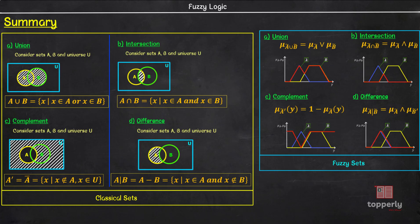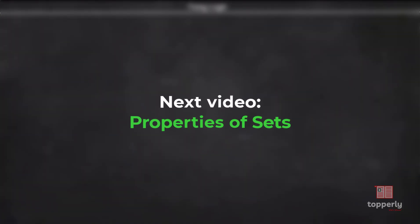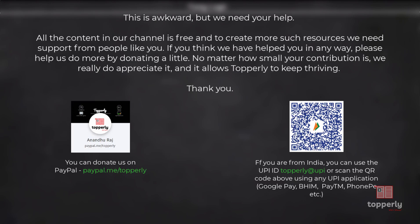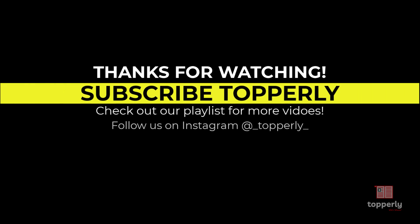That's all for this lecture. To summarize, we have learned the definition of union, intersection, complement, and difference operations for both classical sets and fuzzy sets. In the next video, we will learn about the properties of sets. I hope you understood all the concepts taught in this lecture. If you have any doubts, feel free to ask them in the comments — either me or some other viewer will surely help you out. If you found this lecture useful, please like the video and subscribe to our channel. Thank you for watching and have a great day.